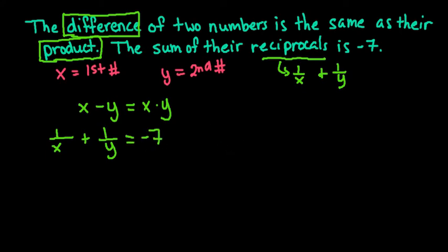There are a lot of different ways to solve this. I'm going to solve for y in the first equation. Since I have a y on both sides, I'm going to bring this y over here and rewrite this as x equals xy plus y.